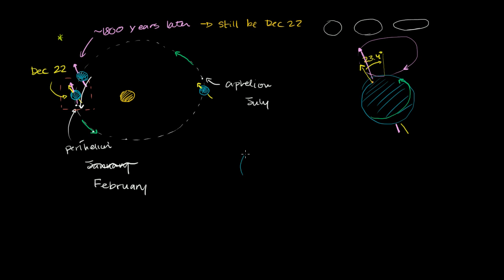So if I draw Earth, this is my little drawing of Earth. Let me put the poles over here, North Pole and South Pole. It actually turns out that Earth is fatter than it is taller.